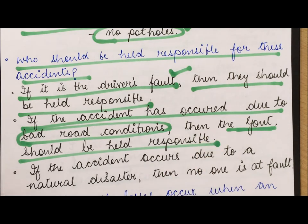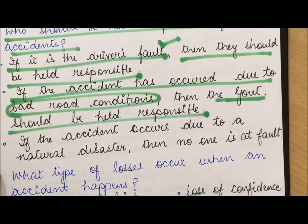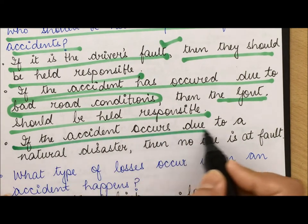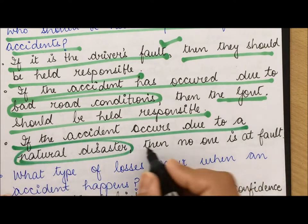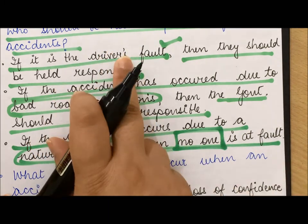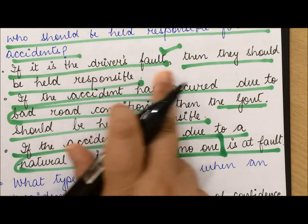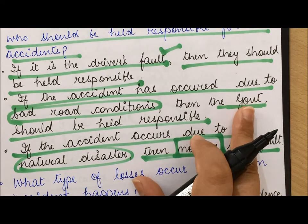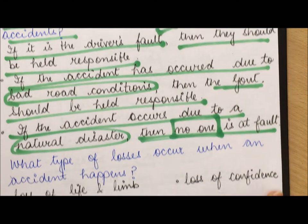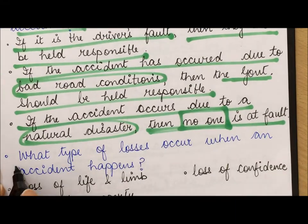Finally, some accidents happen due to natural disasters — landslides, floods, or sudden earthquakes. Landslides in particular cause many accidents, especially in hilly areas. If the accident occurs due to a natural disaster, then it is no one's fault because you cannot stop nature. So to summarize: driver's fault means the driver is responsible, bad roads means the government is responsible, and natural disaster means no one is at fault.